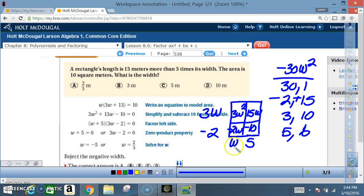just going to be w. I got a 15w and a negative 10. The greatest common factor is going to be 5. I got a 3w squared and a 15w. The greatest common factor is going to be 3w.